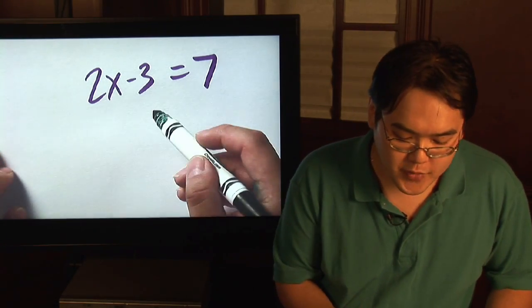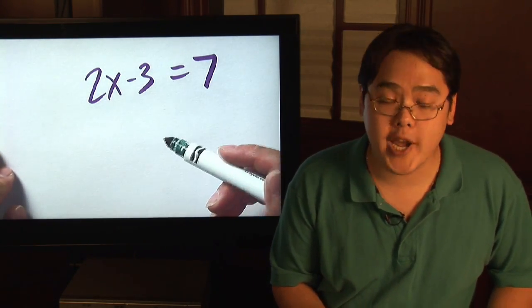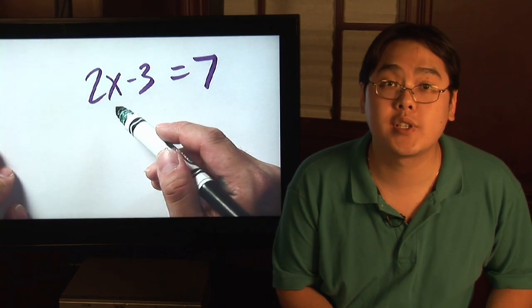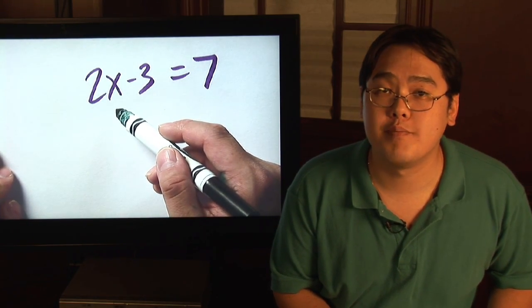Now here's an illustration. You have 2x minus 3 equals 7. Your objective is to solve for x, in other words find out the missing number that x happens to be.